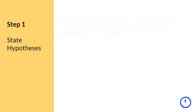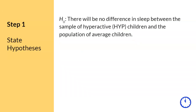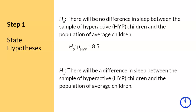Step 1. Since we are studying the effect of hyperactivity on sleep, the hypotheses will include these variables. Since the treatment in this study was children who are hyperactive, I shortened it to HYP. In notation, if the single sample is not different from the population, then the sample should have the same mean as the population, which is mu equals 8.5. The research hypothesis will reflect that there is a difference — if the sample is different from the population, then the sample should not equal the same mean as the population.